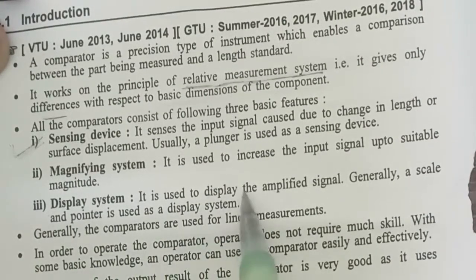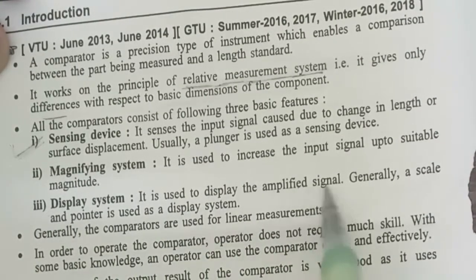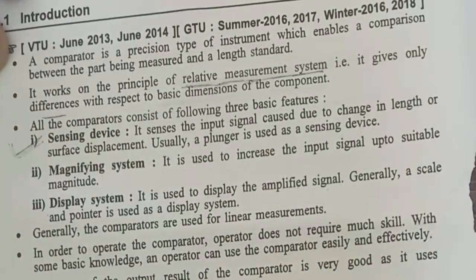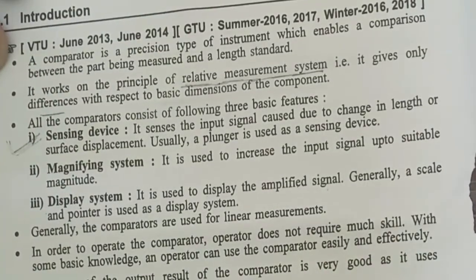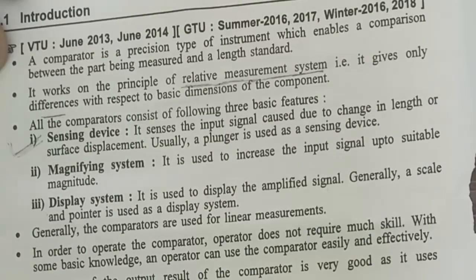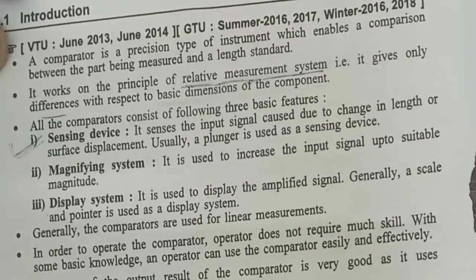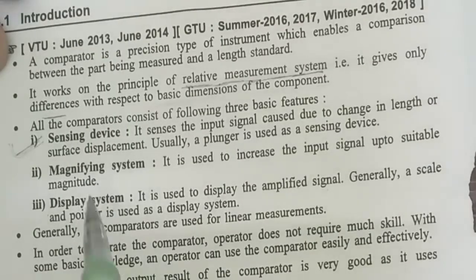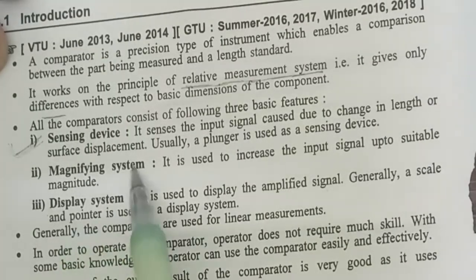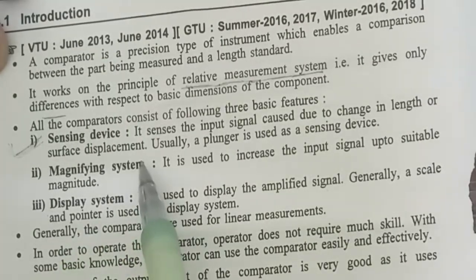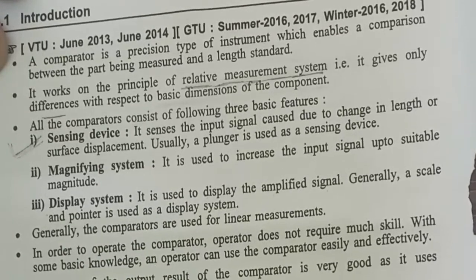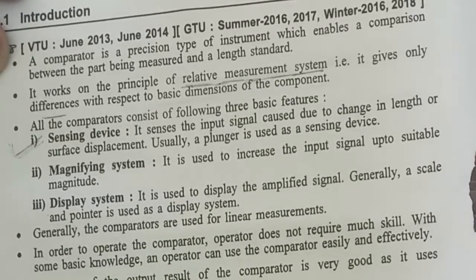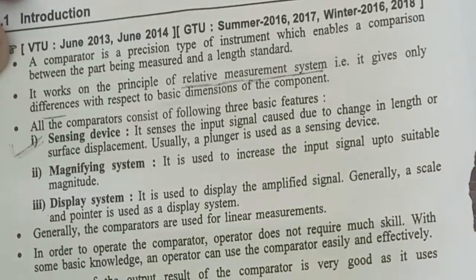The display system is used to display the amplified signal. It means with a small amount of change, you can indicate it in a large manner. This is called the magnifying system. The mechanism inside the dial indicator is called the magnifying system.